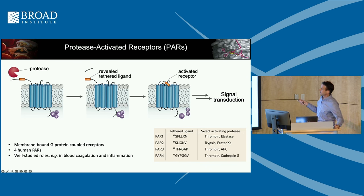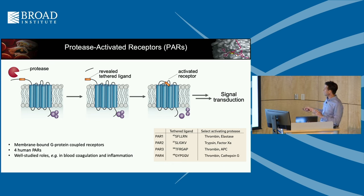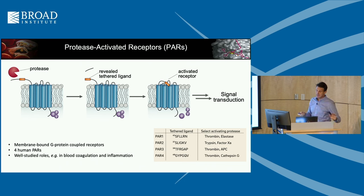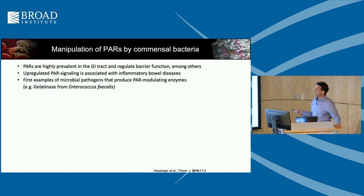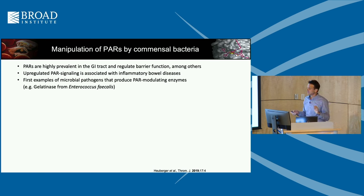PARs are a cool family of signaling molecules with G-proteins on the inside and the trigger for signaling is a ligand on the outside — an N-terminal peptide. When a protease comes and cuts it, it produces a new fragment that's still tethered to the receptor, allowing it to bind to itself and turn on signaling. The cell then recycles this by internalizing and degrading the receptor. There are four PARs; the one I'm mainly talking about is PAR2, predominantly cleaved on the host side by trypsin and Factor Xa.